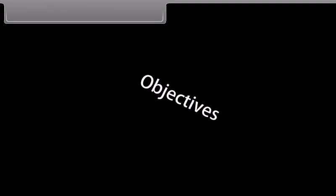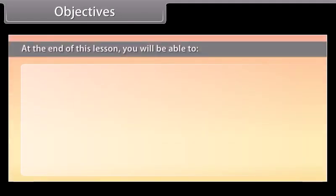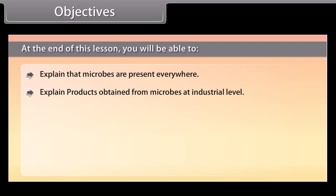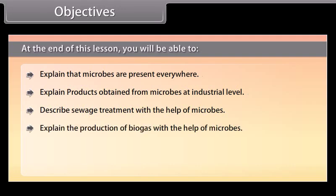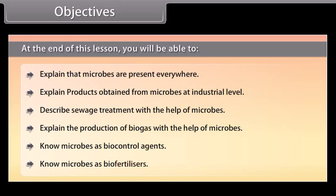Objectives. At the end of this lesson, you will be able to: explain that microbes are present everywhere; explain products obtained from microbes at industrial level; describe sewage treatment with the help of microbes; explain the production of biogas with the help of microbes; microbes as biocontrol agents; and microbes as biofertilizers.